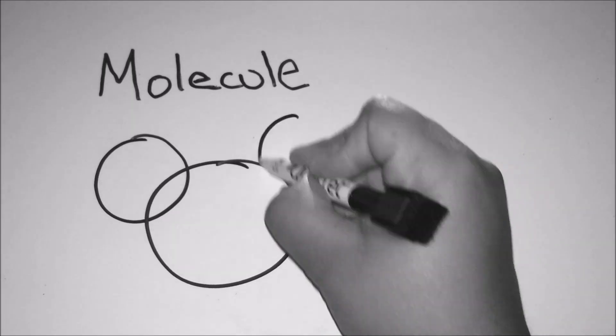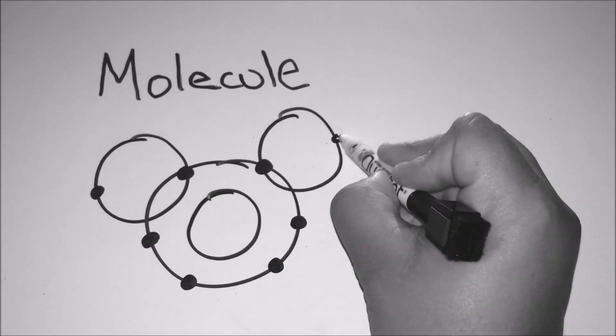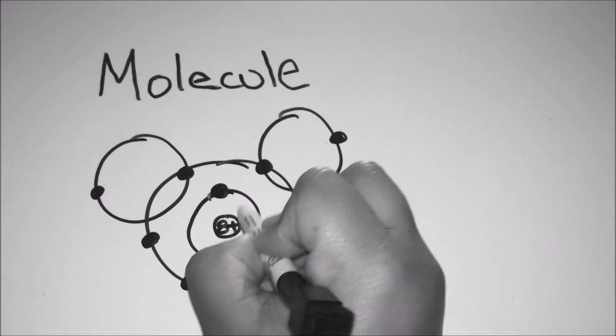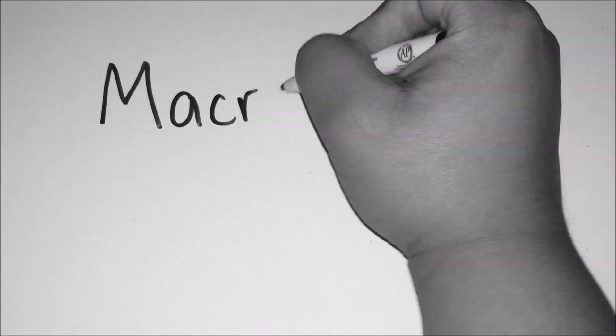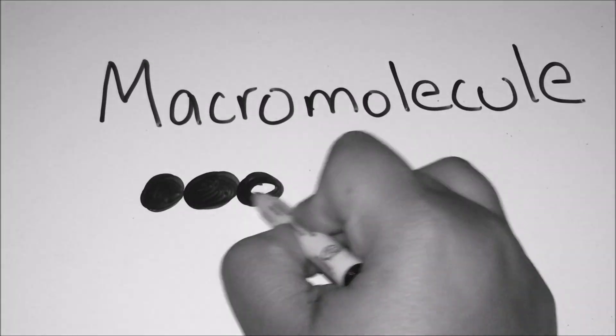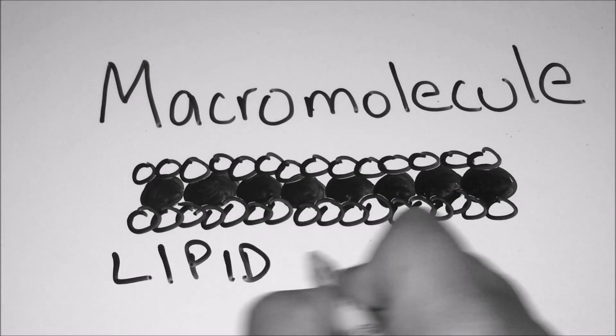The next level are molecules. When more than one element bonds together, they are called molecules. Another famous molecule is H2O or commonly known as water. Water has two oxygen elements bonded to a hydrogen element. The next level are macromolecules which is basically more than one bonded molecule. An example of a macromolecule is a lipid or a fat molecule.